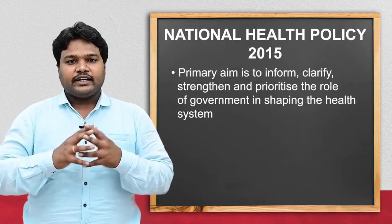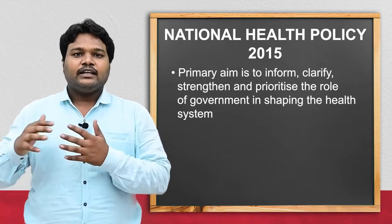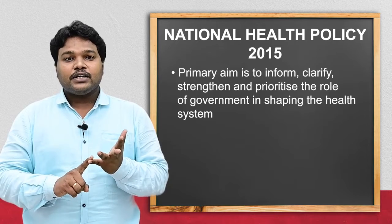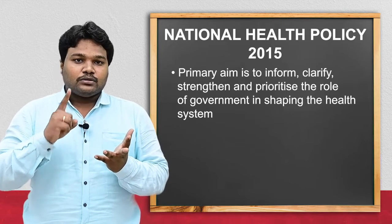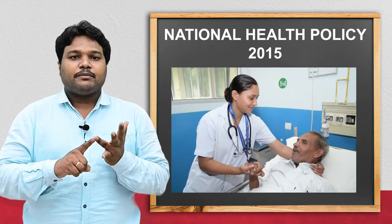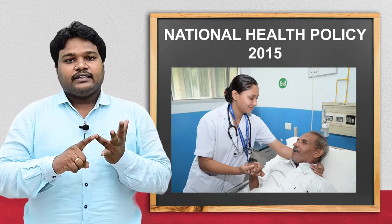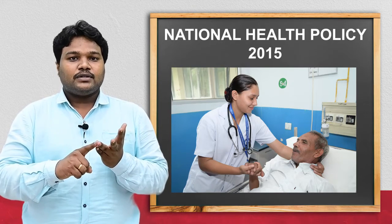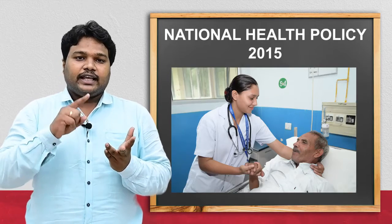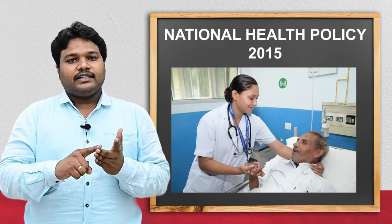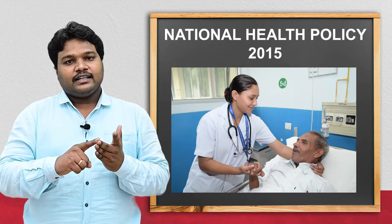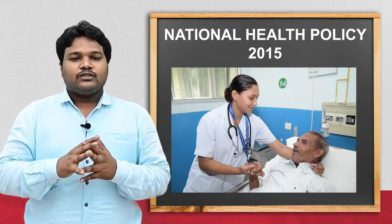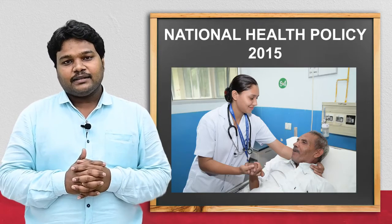They have kept the same objectives and are working toward them till today. National health policy was first framed in 1983 with the objective of health for all, but it was not achieved. Again, national health policy 2002 was evolved, with aims set for 2014, which were also not achieved. Now in 2015, a new national health policy was framed. This policy is still ongoing. Health policy has been revised multiple times because health for all individuals has not yet been achieved.